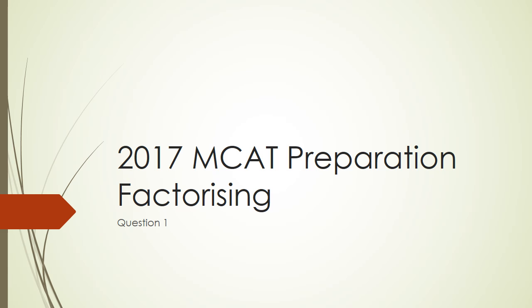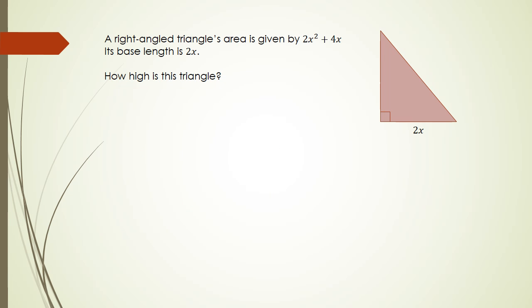Okay, let's get started. The first question we have here is a right-angle triangle. The area is given by 2x² + 4x, its base length is 2x, and it's asking you how high is this triangle.